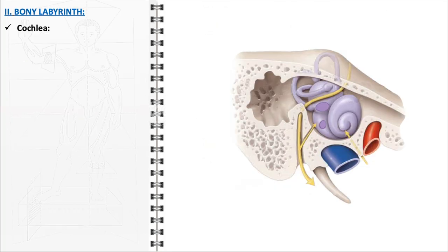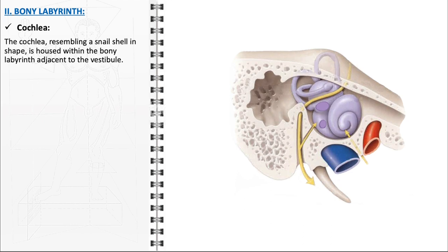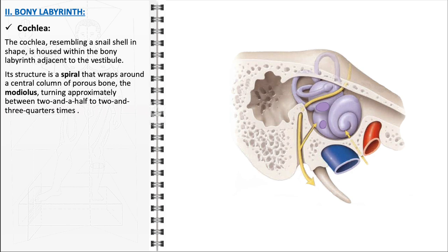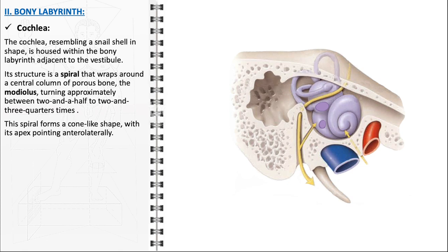The cochlea, also a component of the bony labyrinth, is an intricate and vital structure for the sense of hearing. Resembling the shape of a snail shell, the cochlea is situated adjacent to the vestibule, positioned to receive sound vibrations and convert them into neural signals. The cochlea's structure is characterized by a spiral that wraps around a central pillar of porous bone known as the modiolus. This spiral winds approximately two and a half to two and three-quarters times, forming a cone-like shape. The apex, known as the helicotrema, points anterolaterally, and it is at this point that the scala vestibuli and scala tympani — the two main perilymph-filled tubes — converge.